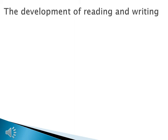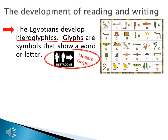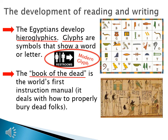Since the Egyptians created such a complex civilization, they had to develop reading and writing to keep everything in order, and the Egyptians developed hieroglyphics. Glyphs are symbols that show a word or letter, and you use glyphs almost every day — for example, the little figures on bathroom doors that tell you which is the men's room and which is the ladies' room. The Egyptians also wrote the Book of the Dead, the world's first instruction manual, which deals with how to properly bury dead folks.